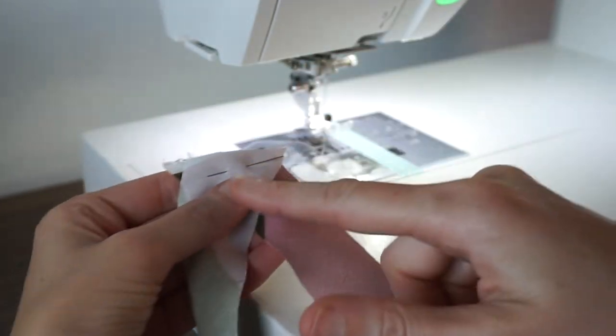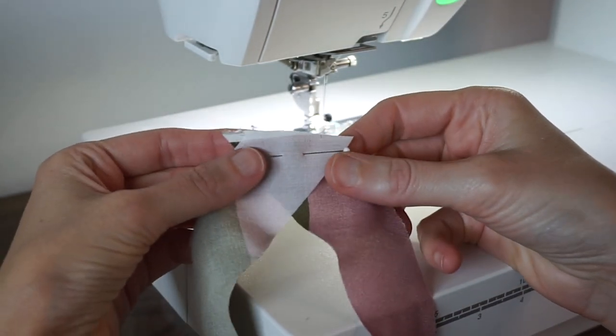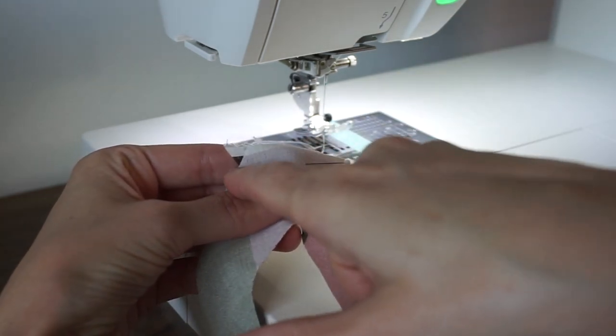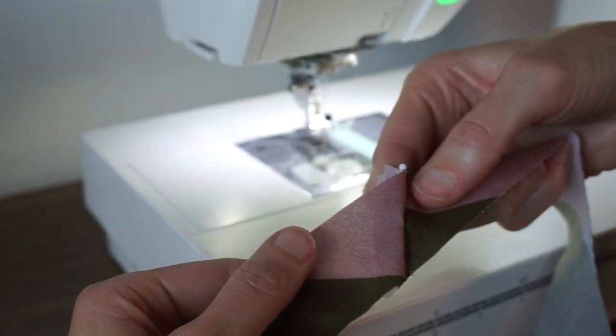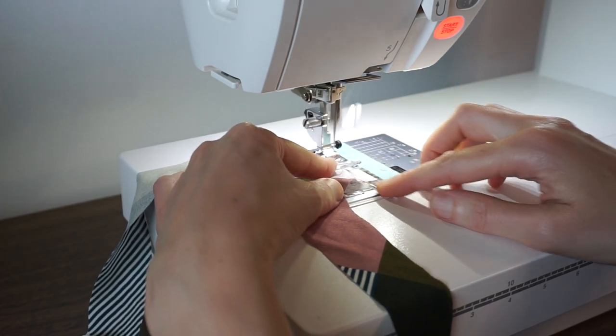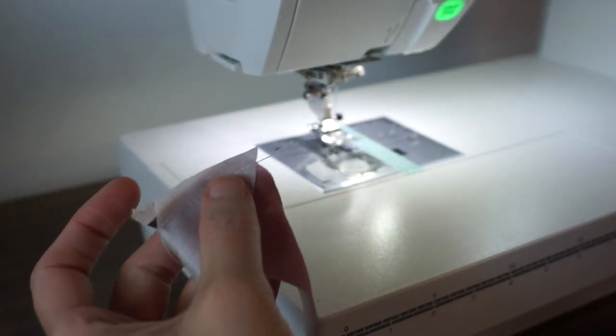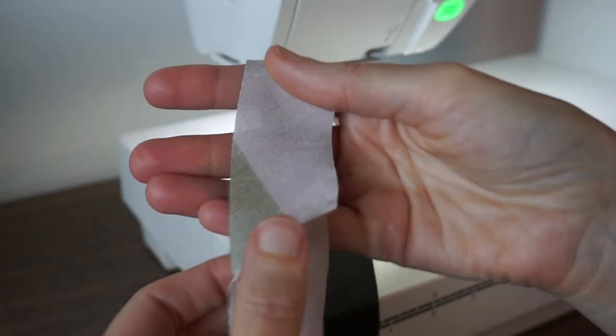To sew the strips of bias tape together to make our ties, you want to overlap them with right sides together and at an angle. Each strip needs to have the same angle, and then you will stitch from that inside corner to the inside corner. If you want to test whether it's going to work, you can put your pin in horizontally and open it up just a little to pre-check before stitching. Then you can trim off these little dog ears and press the seam open.